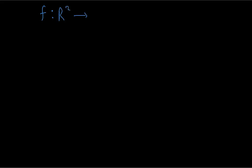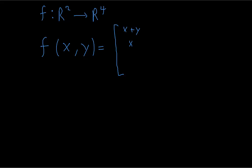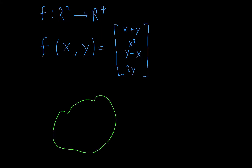We can have a function be a map from any space to any other space. For example, we could have a function from R² to R⁴, which means the inputs are a pair of real numbers x and y, and then you get four separate numbers as an output — in other words, a vector with four components. If we were to draw a diagram, each pair of numbers in the domain maps to a point in the four-dimensional codomain.